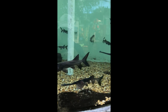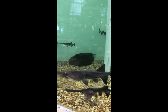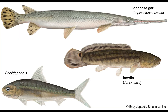The last extant non-teleost clade is Holostei — the gars and bowfins — both toothy freshwater predators. Gars can be found across North and Central America and the Caribbean, while the monotypic bowfin, Amia calva, is only found in the Mississippi River Basin.